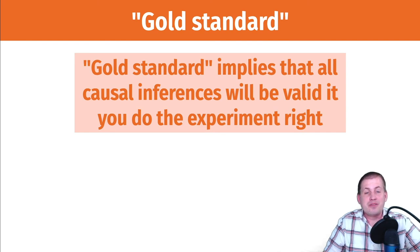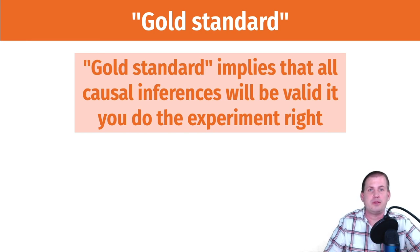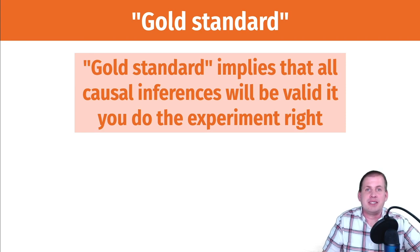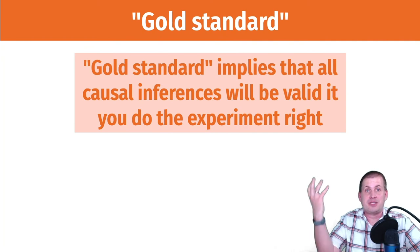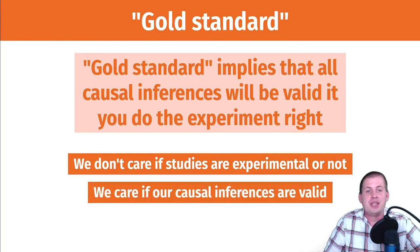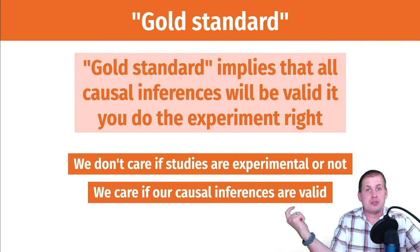The other issue with calling RCTs the gold standard is that it implies any causal inference from an RCT will be true if you do the experiment right — but that's not true. You could do an RCT incorrectly. You could have issues with external validity, so even though you have true causal effects for a specific subset of the population, you have no idea if that scales up to the rest of the world. Ultimately, we don't care if studies are experimental or not — all we care about is whether causal inferences are valid.